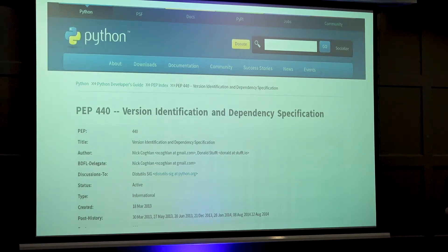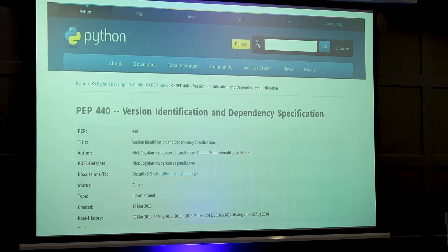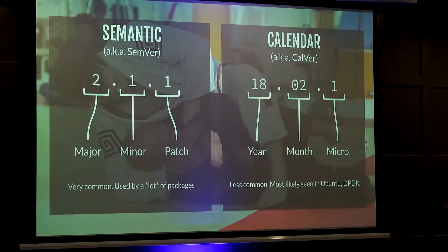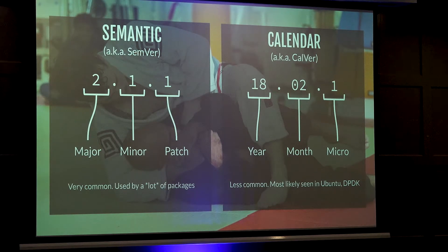Python helpfully has a PEP and a couple of other PEPs around how to actually do versioning for a Python library. It gives a whole list of things you're supposed to match and a couple of different options. Your typical, more complex version number will look something like a major.minor.patch format. The two versioning types usually fall into one of two camps: semantic versioning, which pretty much everyone uses nowadays, with the exception of projects like Ubuntu and DPDK, which use calendar versioning — for example, 1804 meaning released in April 2018.